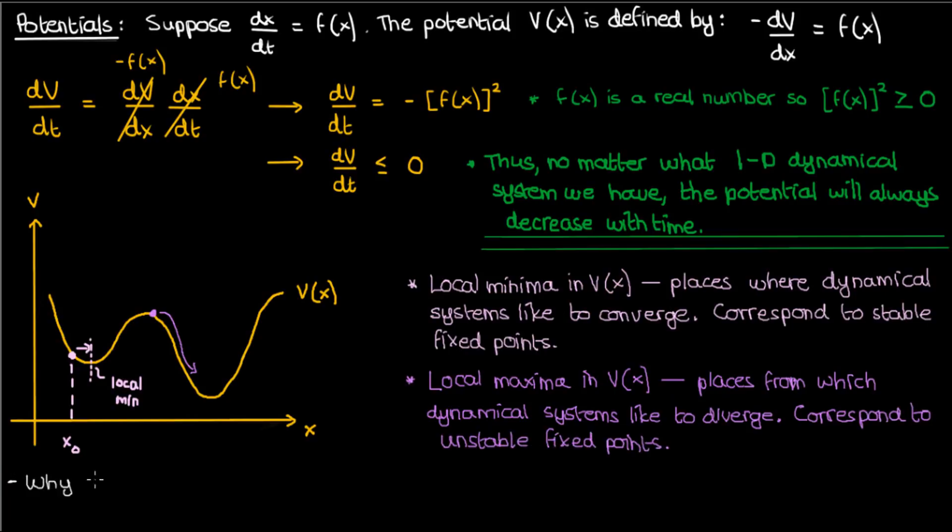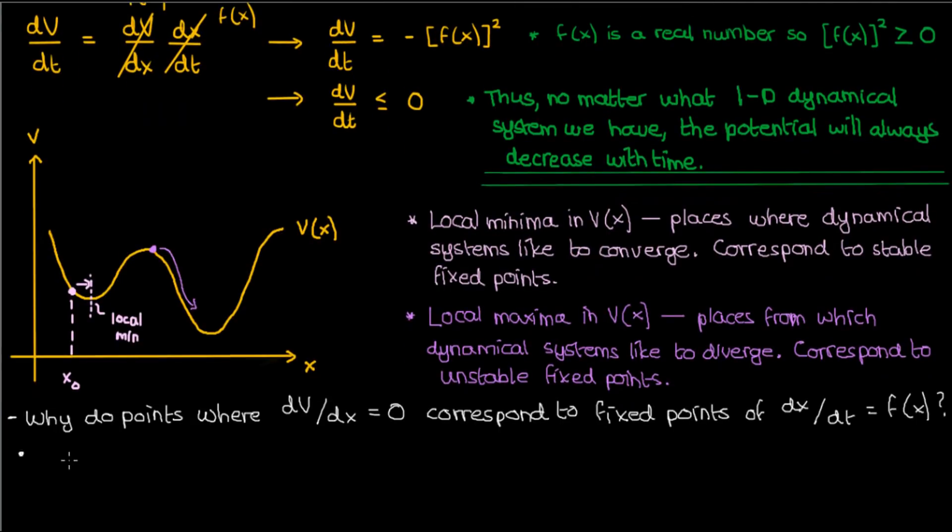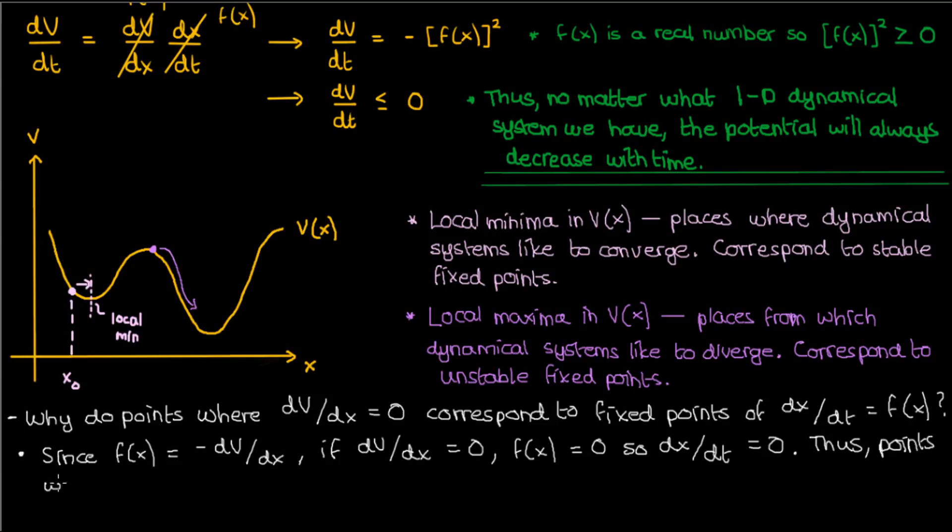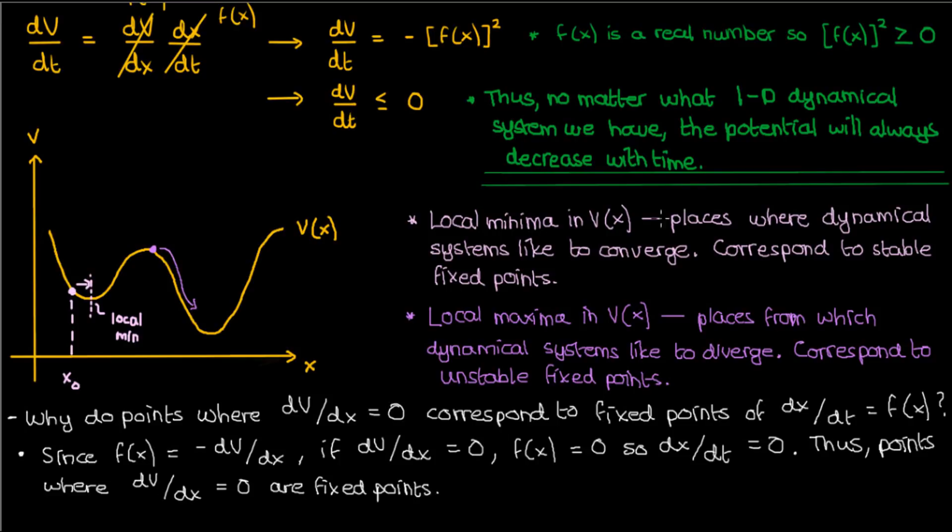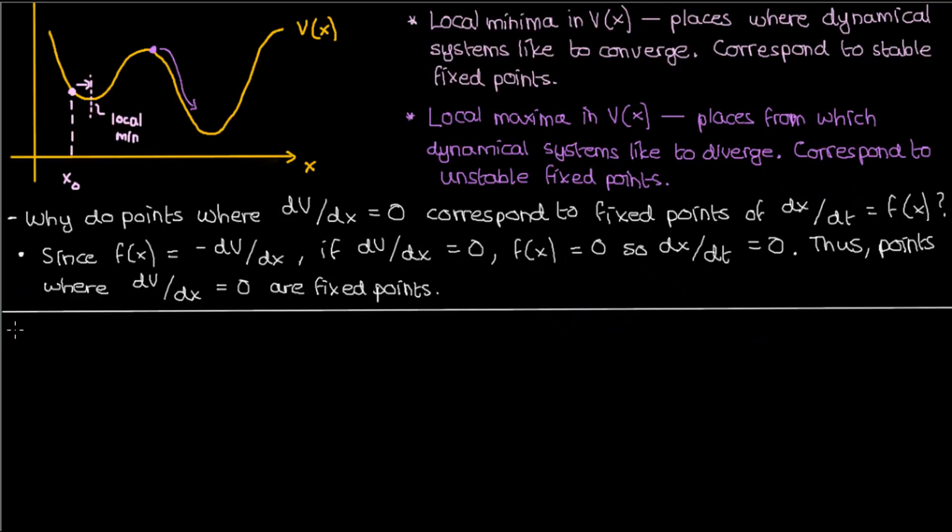Now you might ask, why do local minima and local maxima, presumably places where dV/dx is zero, why do these points correspond to fixed points of dx/dt equals f(x)? Well, it comes from the potential definition that we described earlier. Since f(x) is negative dV/dx, places where dV/dx is zero correspond to places where f(x) is zero, and places where f(x) is zero are places where dx/dt is zero, and places where dx/dt is zero are fixed points by definition. So by extension, places where dV/dx equals zero are therefore fixed points. Hopefully this discussion should clear up some of the intuition behind potentials and how they work.